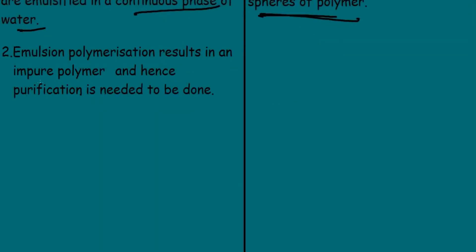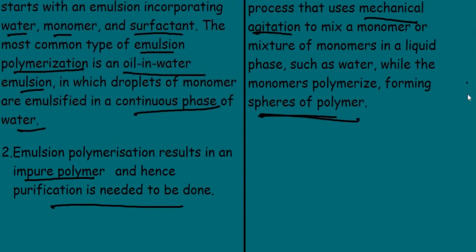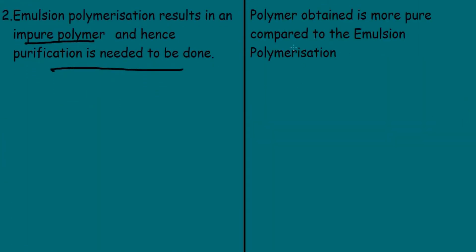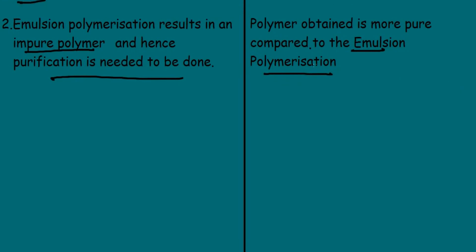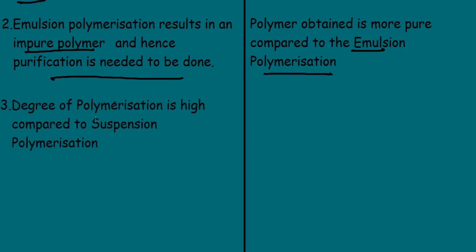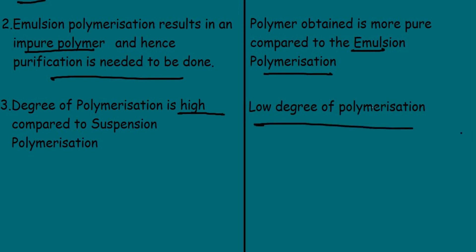Emulsion polymerization results in an impure polymer, and hence purification is needed — the de-emulsifying agent used accumulates in the polymeric chains as impurities, so the polymer must be purified before becoming commercially available. For suspension polymerization, the polymer obtained is more pure compared to emulsion polymerization, but it has a lower degree of polymerization compared to emulsion polymerization.